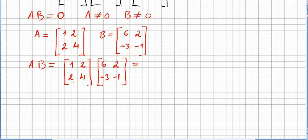So 1 2 2 4 times 6 2 minus 3 minus 1. So 1 times 6 plus 2 times minus 3, that's 6 minus 6 so you're getting 0 here. You're getting 0 here and 0 here and 0 here. So here you have A times B equals 0 without A or B being 0.